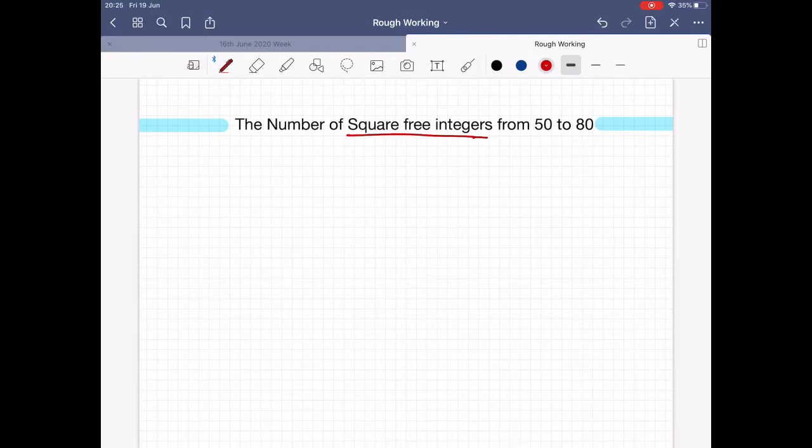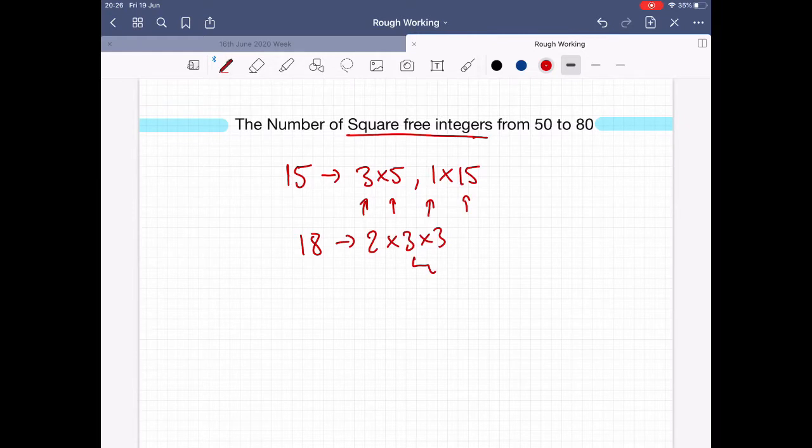For example, 15 is divisible by 3, 5, 1, and 15. This is a square-free integer because none of these are squares apart from 1, but 1 works. On the other hand, if we have 18, this is 2 times 3 times 3. This is not square-free because 3 times 3 is 9, which is a square.